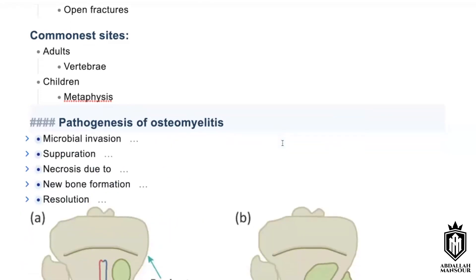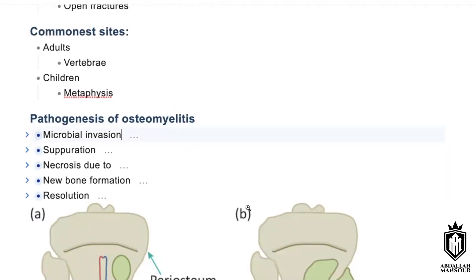Examiner: Obaida, you need to work on this. You need to be very direct and signpost. Tell me what you're talking about first. The pathogenesis of osteomyelitis includes: one — microbial invasion; two — suppuration; three — necrosis; four — new bone formation; five — resolution. These are the five steps.